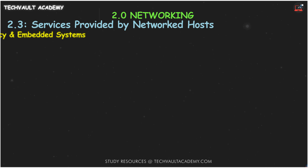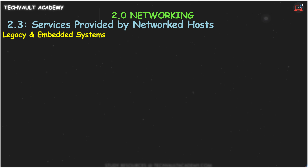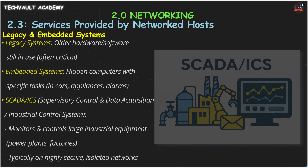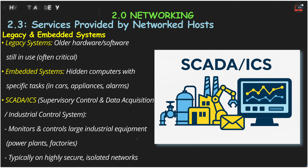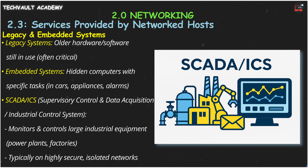Next, let's touch on legacy and embedded systems. Legacy systems are simply older hardware or software still doing important work. Embedded systems are the hidden computers inside devices designed for one specific job, like in your car, a smart appliance, or a fire alarm — devices you use usually without ever interacting with their underlying operating system.